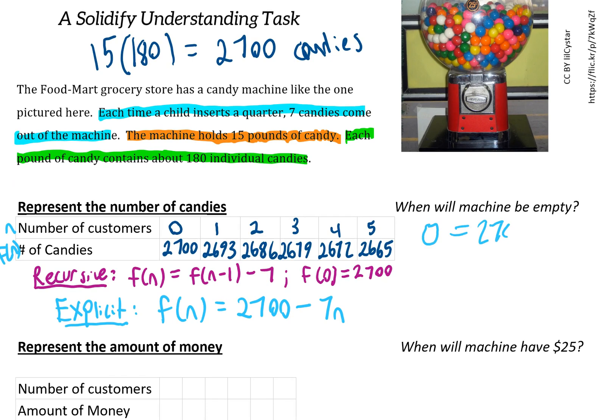So I get 0 = 2,700 - 7n. Using eighth-grade algebra for two-step equations, I subtract 2,700 from both sides to get -2,700 = -7n, then divide both sides by -7 to get n = 385.7 customers.